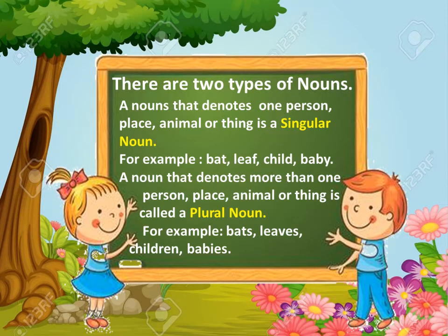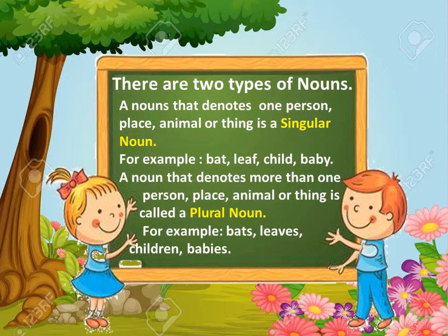There are two types of nouns. A noun that denotes one person, place, animal or thing is a singular noun. For example: bat, leaf, child, baby. A noun that denotes more than one person, place, animal or thing is called a plural noun. For example: bats, leaves, children, babies.